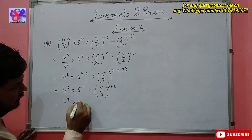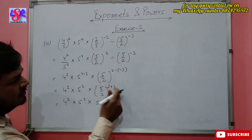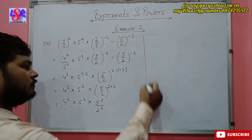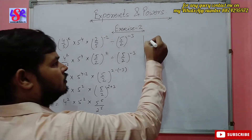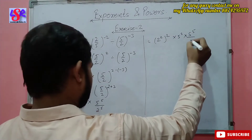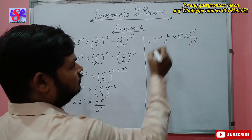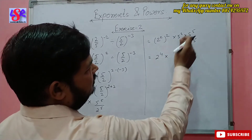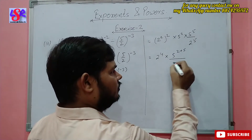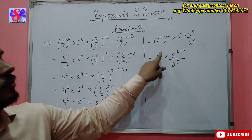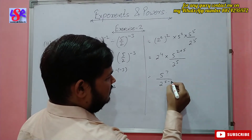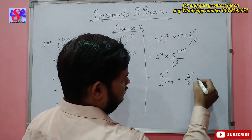Continuing: we have 4 to the power 2 into 5 to the power 2 into 5 to the power 5, upon 2 to the power 5 — powers distributed in numerator and denominator. Now 4 to the power 2 can be written as 2 to the power 2, whole to the power 2, which multiplies to 2 to the power 4. The bases of the 5 terms are the same, so powers add: 5 to the power 2 plus 5 equals 5 to the power 7. The 2 bases are the same so powers subtract: 2 to the power 4 divided by 2 to the power 5 gives 2 to the power 4 minus 5. The final answer is 5 to the power 7 upon 2 to the power 1, or 5 to the power 7 upon 2.